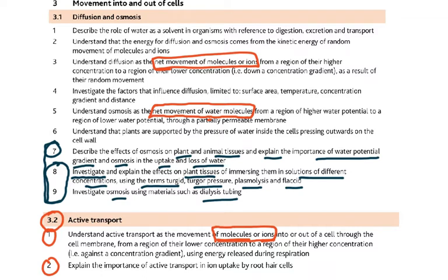Active transport is the movement of molecules and ions into or out of a cell, through the cell membrane, from a region of lower concentration to a region of higher concentration — against a concentration gradient — using energy released during respiration. The word is 'released,' not 'produced.' Released — R-E — respiration — R-E.